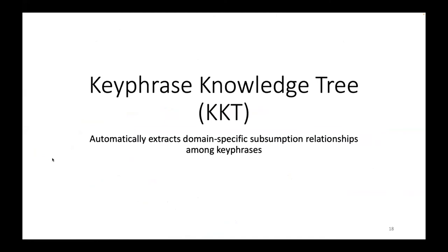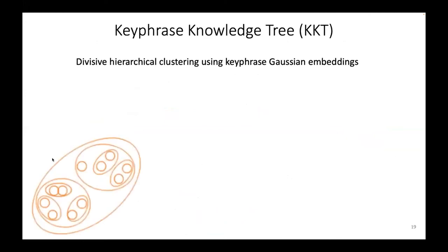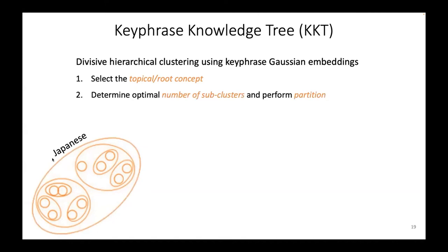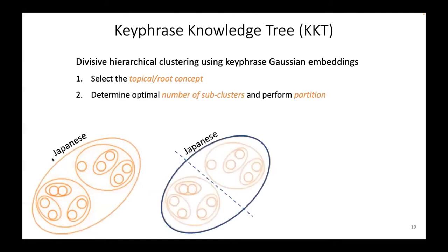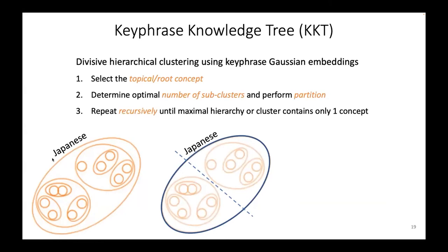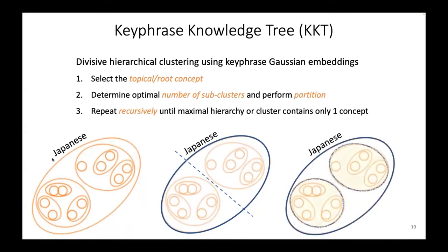Given our trained keyphrase Gaussian embeddings, we can produce a keyphrase knowledge tree to automatically extract domain-specific subsumption relationships among keyphrases. To construct the knowledge tree, we perform divisive hierarchical clustering using the trained keyphrase Gaussian embeddings. We first initialize a single cluster and select a keyphrase with the highest distributional similarity with all others to represent the root concept. We then determine the optimal number of subclusters using the elbow method and use k-means partitioning, repeating recursively until maximal hierarchy is reached or each cluster contains only one concept.